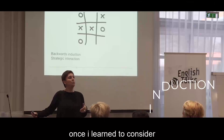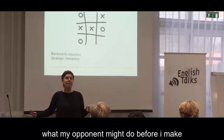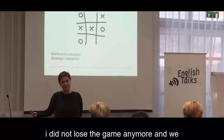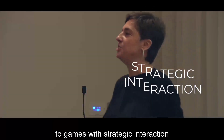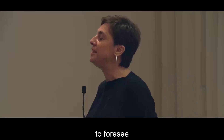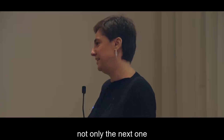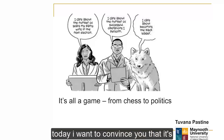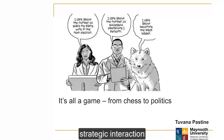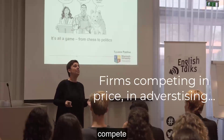Once I learned to consider what my opponent might do before I make my move, I did not lose the game anymore, and we moved to games with strategic interaction that were more complicated, where I had to foresee my brother's many moves into the future, not only the next one. Today, I want to convince you that it's all a game — from chess to politics. There is strategic interaction in many environments.